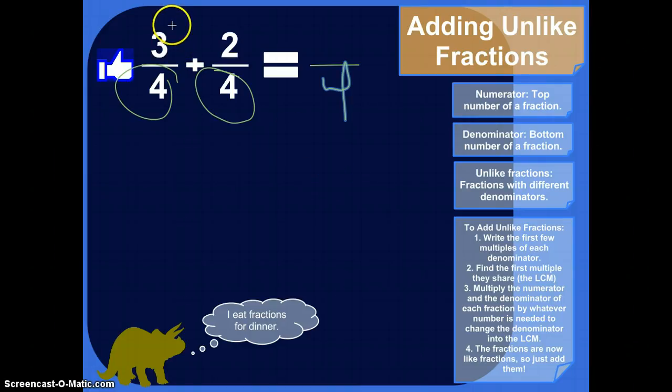Okay. And then you just simply add the numerators, the numbers on the top. So three plus two is five. So that's five-fourths. You could turn that into a mixed fraction, one and one-fourth, or just leave it as five-fourths. So that's nice and easy. It'd be nice if all fractions were like that, but when they're not, we'll know what to do.